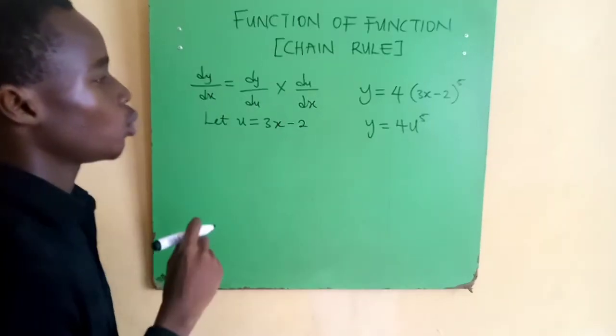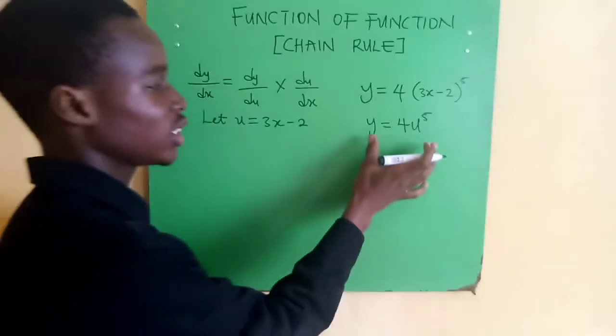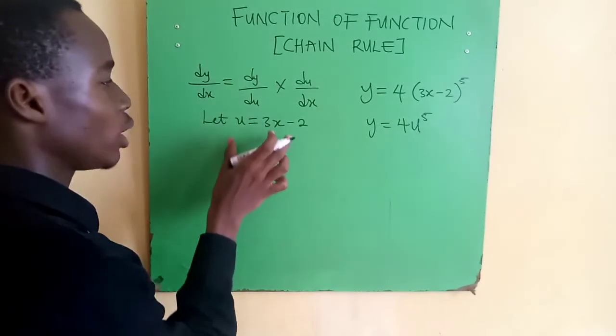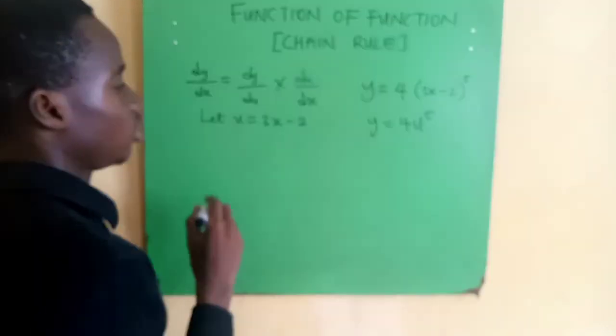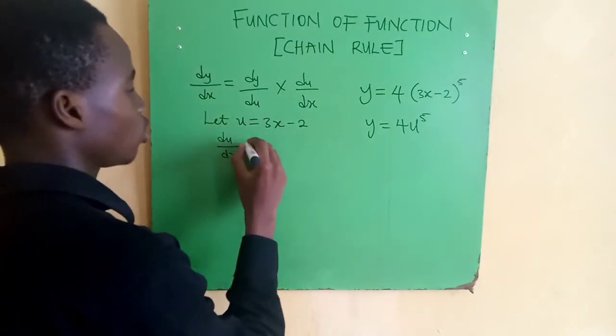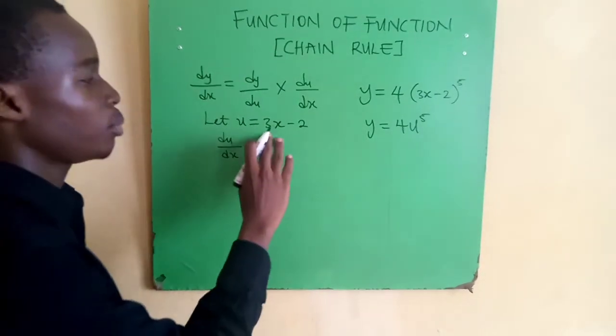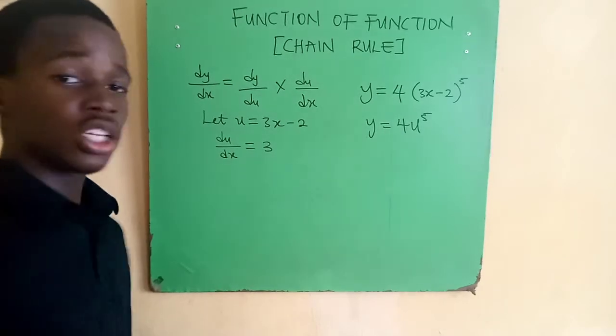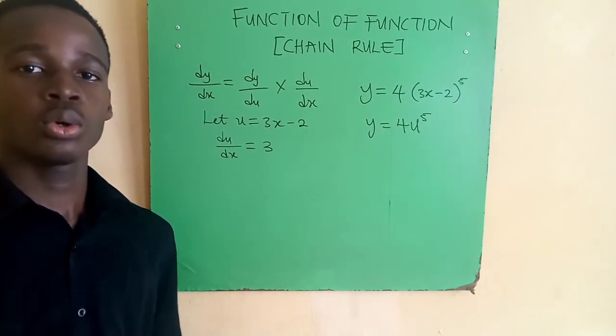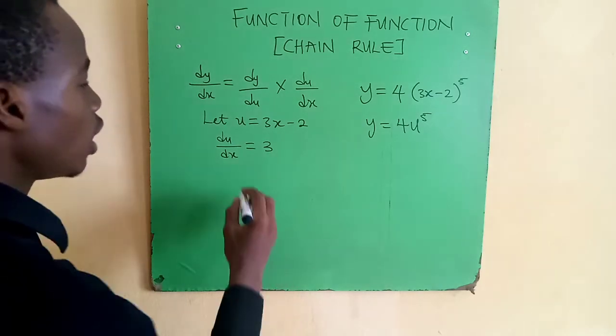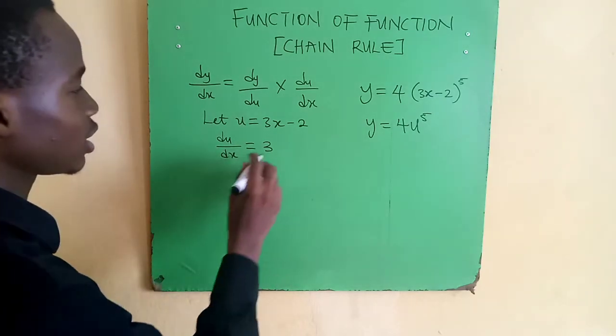Let's find du/dx. We need to differentiate 3x-2. From our previous videos, when we differentiate 3x-2 we get 3. If you haven't watched the previous video, the link is in the description box below. So du/dx = 3.